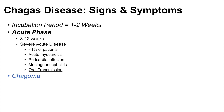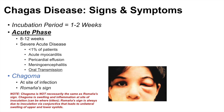When an individual first becomes infected, there's something known as a Chagoma — a swelling at the site of infection. Since individuals are often infected in the conjunctiva of their eyes when they wipe fecal material into them, the swelling at that site is called a Chagoma. Romania's sign is when both the upper and lower eyelid are swollen.